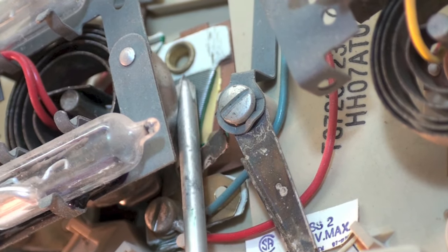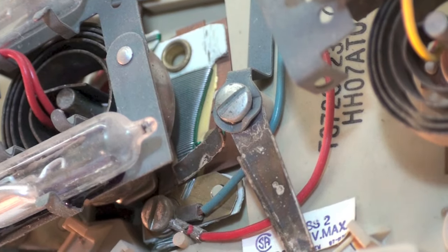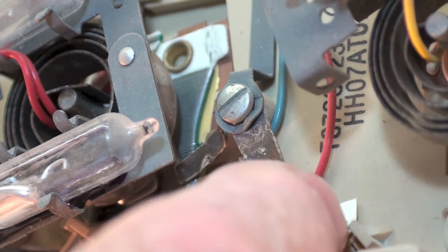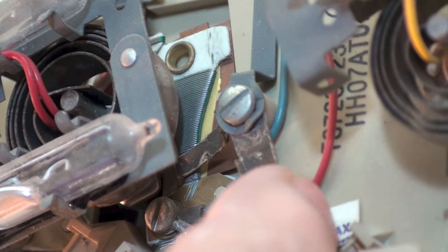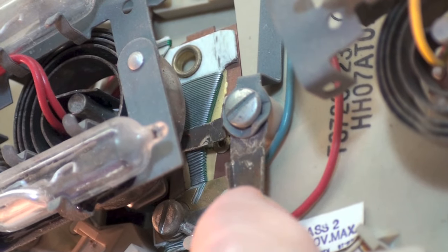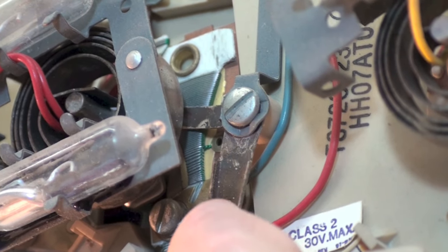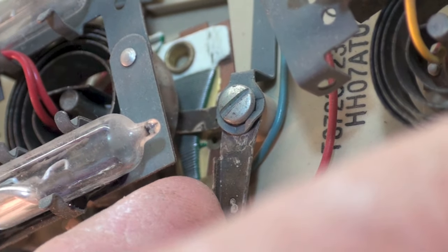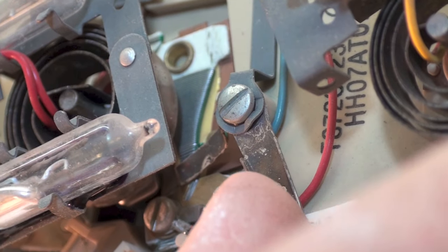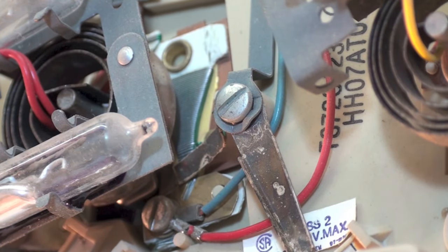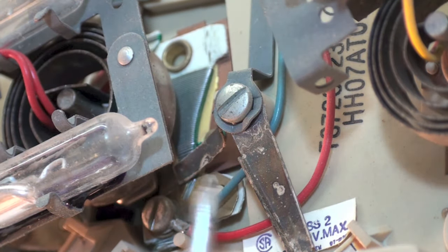See that little coil wire right there? That is the anticipator. And you see that lever moves as I move this bottom lever and it exposes different parts of that little heater to the bimetal which is right there.